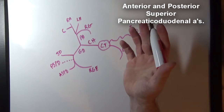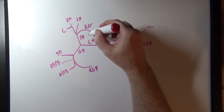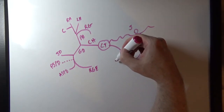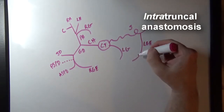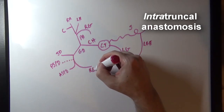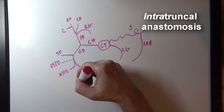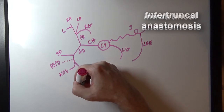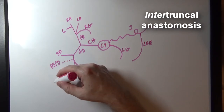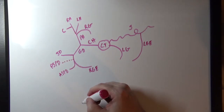Now we can talk about anastomoses. The right gastric artery anastomoses with the left gastric artery — this is an intratruncal anastomosis. The left gastroepiploic and right gastroepiploic arteries also anastomose. And the superior pancreaticoduodenal arteries anastomose with the inferior pancreaticoduodenal arteries, which come from the superior mesenteric artery.